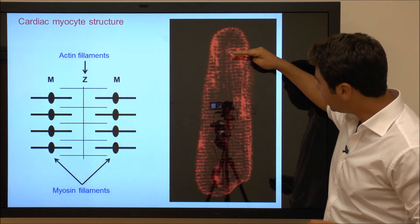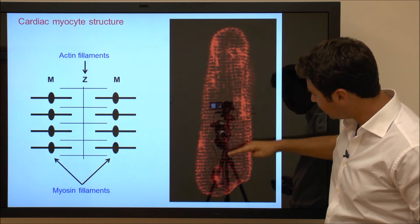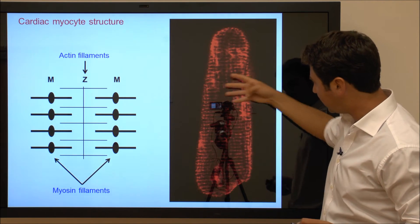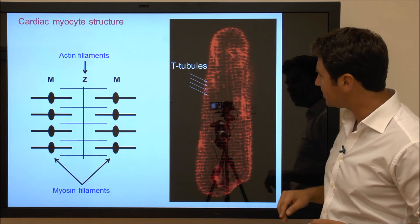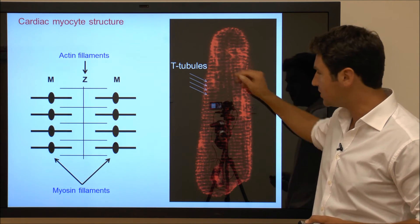And again you can see the membranes are running at regular intervals throughout the cardiac myocyte, and we call these invaginations in membranes transverse tubules or T-tubules.